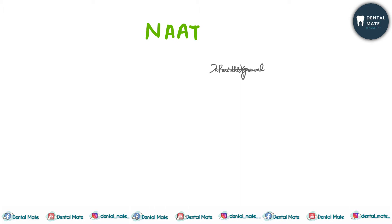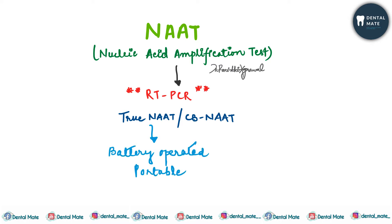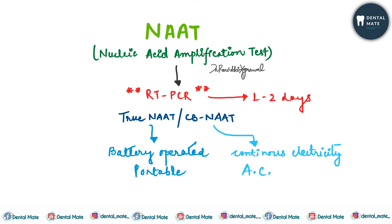NAT or the Nucleic Acid Amplification Test consists of the RT-PCR test, which gives results in two days, and TrueNAT or the Cartridge-Based NAT (CBNAT). TrueNAT is a battery-operated portable test whereas CBNAT requires continuous electricity supply. The RT-PCR is the gold standard for COVID-19 diagnosis and gives results in one to two days, whereas TrueNAT or CBNAT give results in 30 minutes.